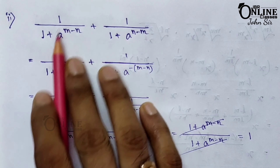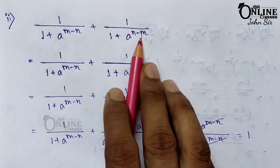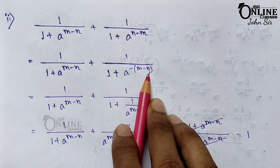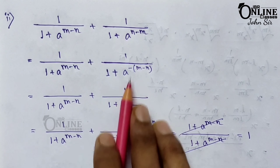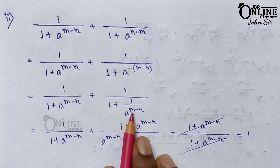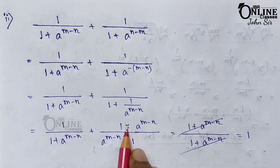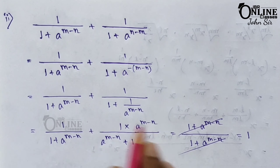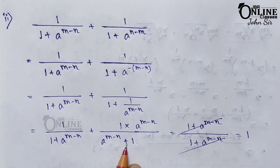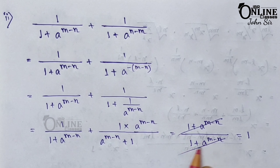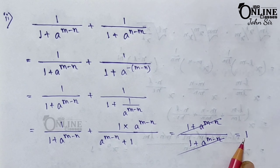Sum 21 (part): 1/(1 + a^(m−n)) + 1/(1 + a^(n−m)). Note a^(n−m) = 1/a^(m−n). Multiply through by a^(m−n): second term becomes a^(m−n)/(a^(m−n)+1). Both fractions now share denominator (1 + a^(m−n)), and numerators 1 + a^(m−n) sum to give 1. Proved equal to 1.